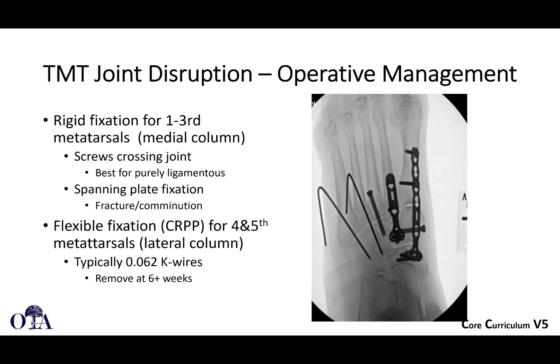Thinking in terms of columns, the medial column—the first, second, and third rays—is fairly rigid, so you can use fairly rigid fixation: transarticular screws or transarticular plates. If there's intercuneiform instability extending to the navicular-cuneiform joint, long spanning plates may be needed. On the lateral side, use flexible fixation since it's the more mobile side. You don't want rigid fixation there, and you'll be taking it out in every case, so pins work nicely—they provide temporary fixation and can be removed at about six weeks.